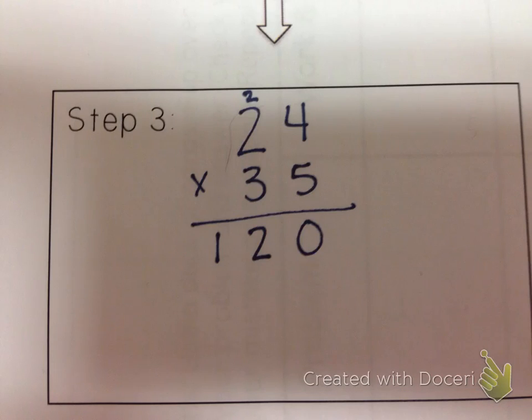Step three is a really important step. We're going to be multiplying now by this three, but since that three is in the tens place, I have to put a zero here in my ones place. So I like to call this the magic zero. The magic zero is very important. If you forget the magic zero, it'll mess up your whole problem.